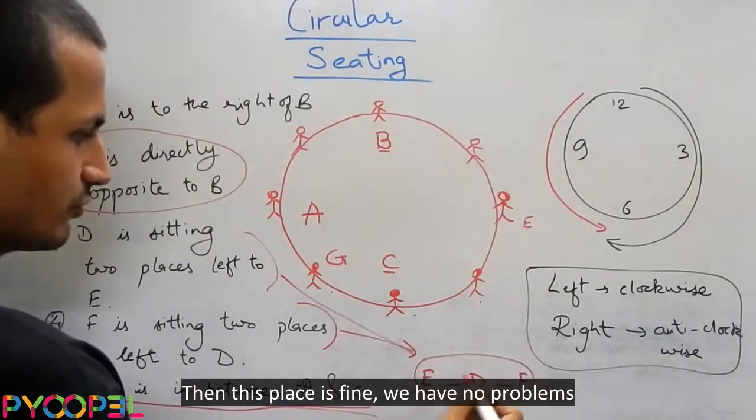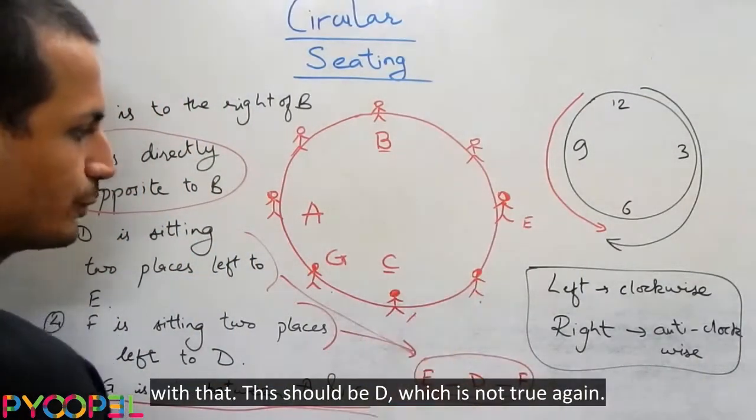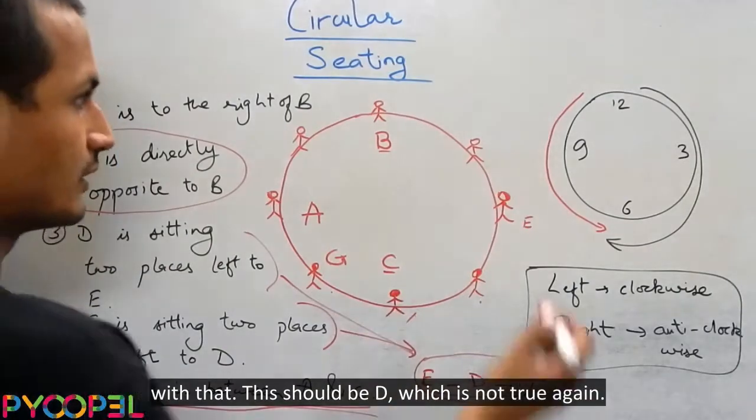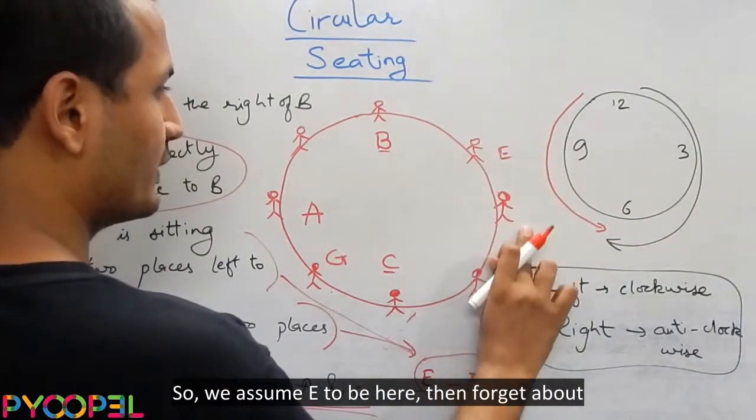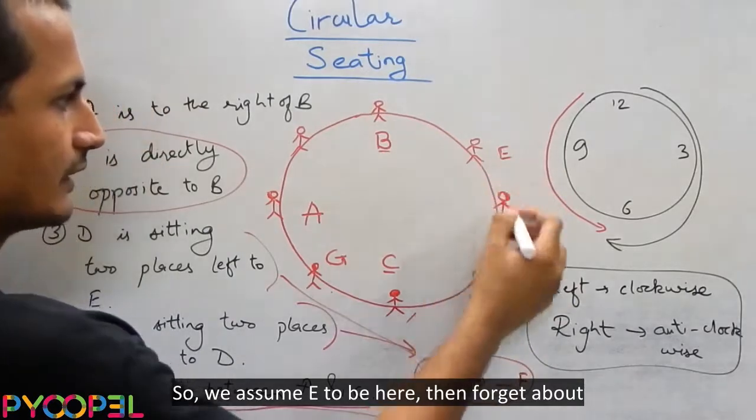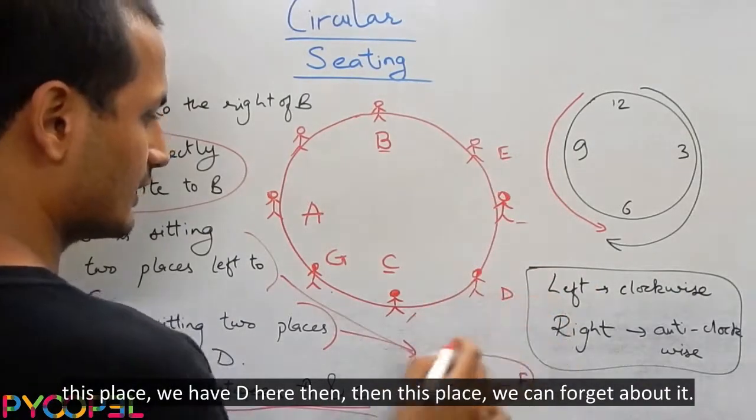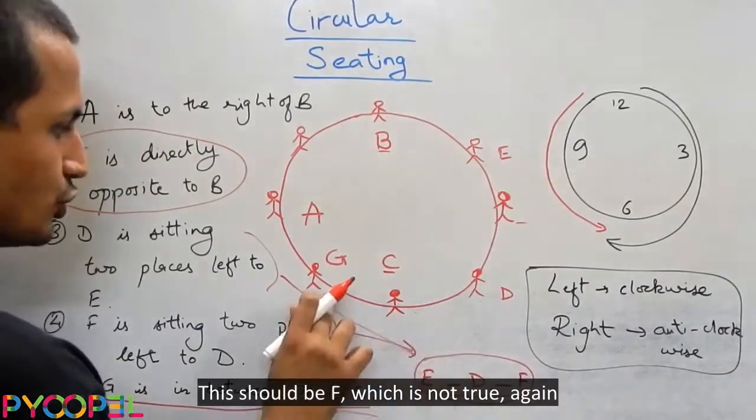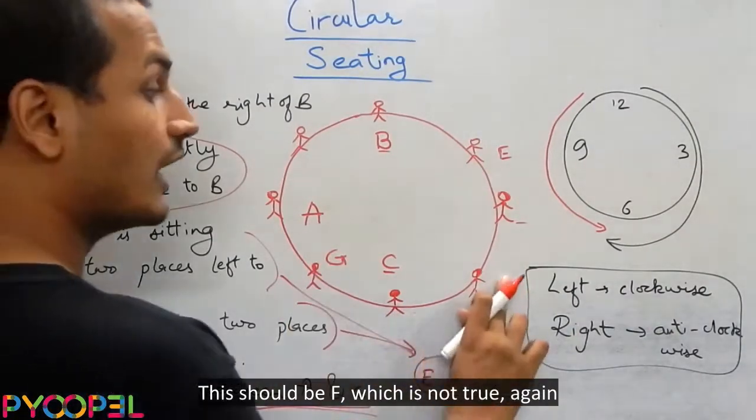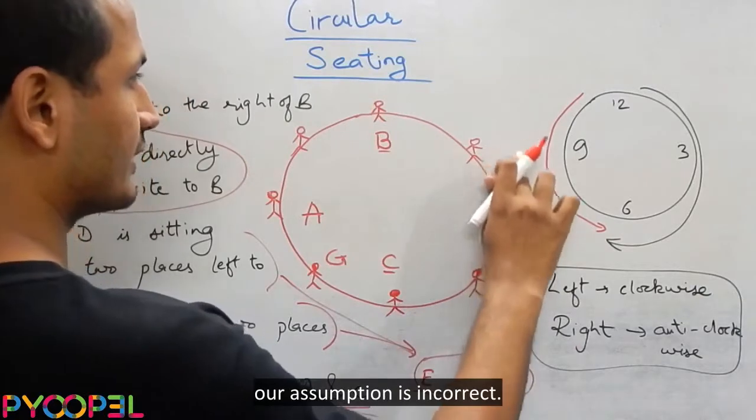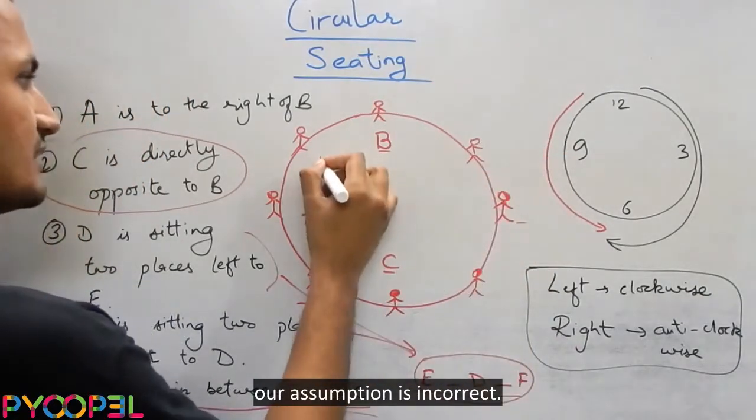Let us have E here. Then this place is fine. We have no problems with that. This should be D, which is not true again. So we assume E to be here. Then forget about this place. We have D here then. Then this place, we can forget about it. This should be F, which is not true. Again, our assumption is incorrect.